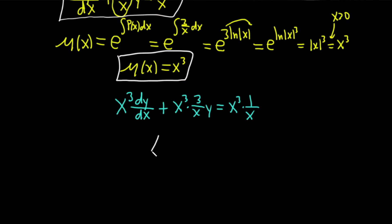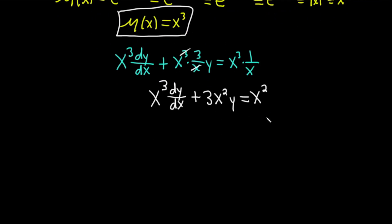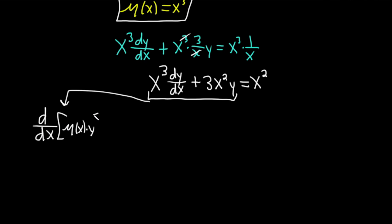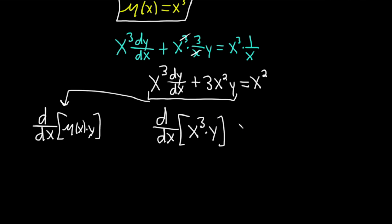This simplifies to x cubed dy/dx plus 3x squared y equals x squared, with cancellation from x cubed divided by x leaving x squared. And this is where something magical happens every time: all of the left hand side is always d/dx of μ(x) times y. So in this case, it's d/dx of x cubed times y, and on the right hand side we have x squared.